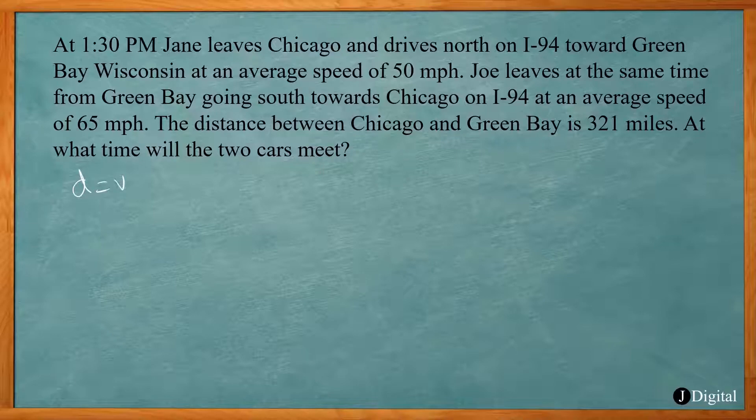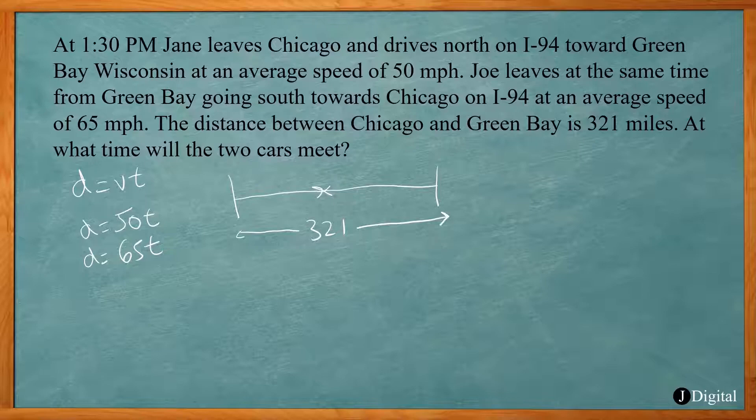We want to deal with our distance formula. The first car is traveling at 50 miles per hour, so that's 50t would be their distance. The second car is going to be 65t because they're traveling at 65 miles per hour. Both of these are distances. If they're traveling towards each other, they're going to meet somewhere. The total distance traveled together is going to be the 321 miles, so together they're going to cover that full distance. We can write 50t plus 65t equals 321.